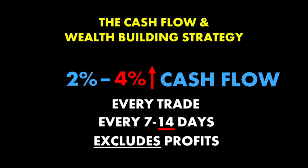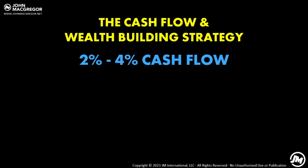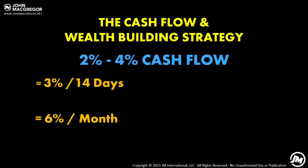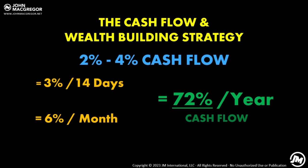If my target is 2% to 4% just in cashflow every seven to fourteen days, what's my annual return? At the midpoint of 3% every 14 days, that's 6% every month, which equals 6 times 12 months — or 72% per year just on cashflow. That is why this strategy is so popular versus the 10% on average per year, or the 0.83% per month the overall market performs.